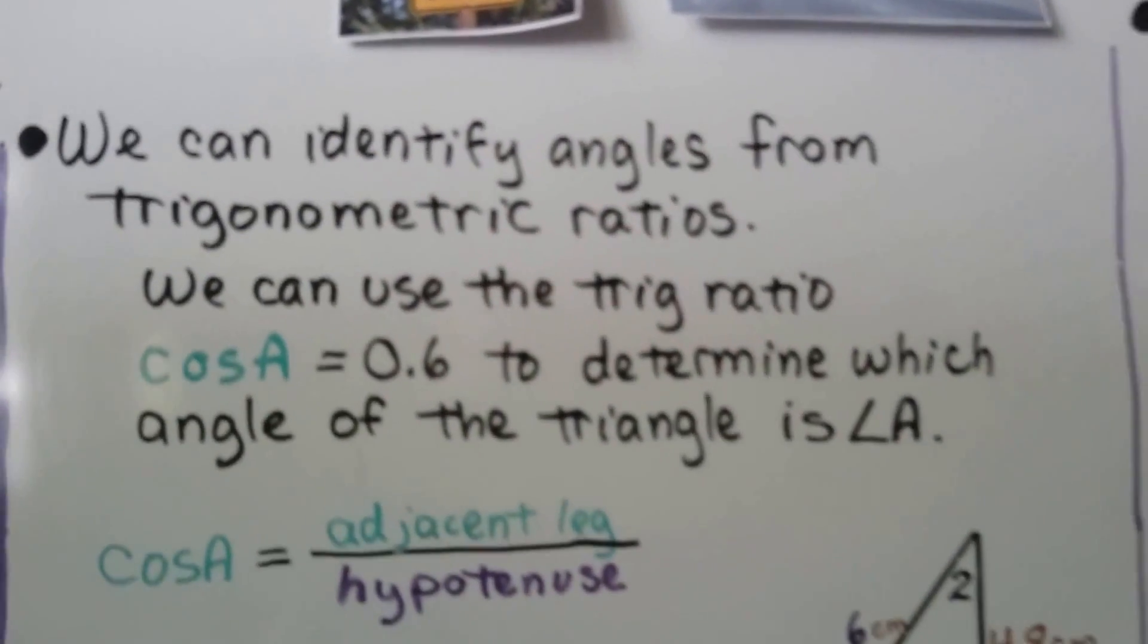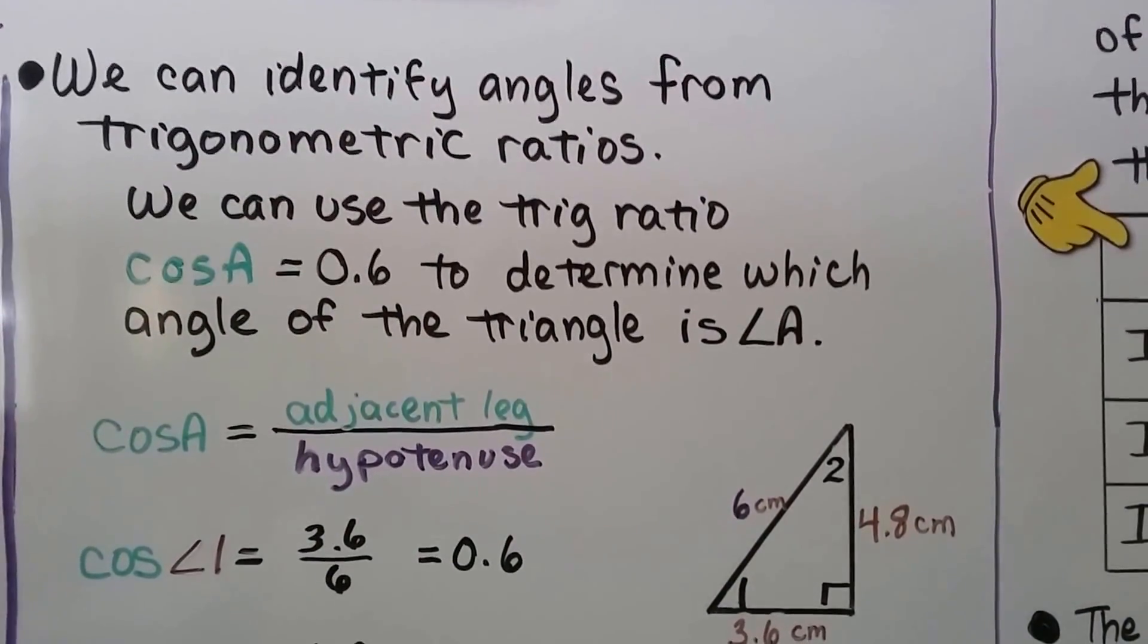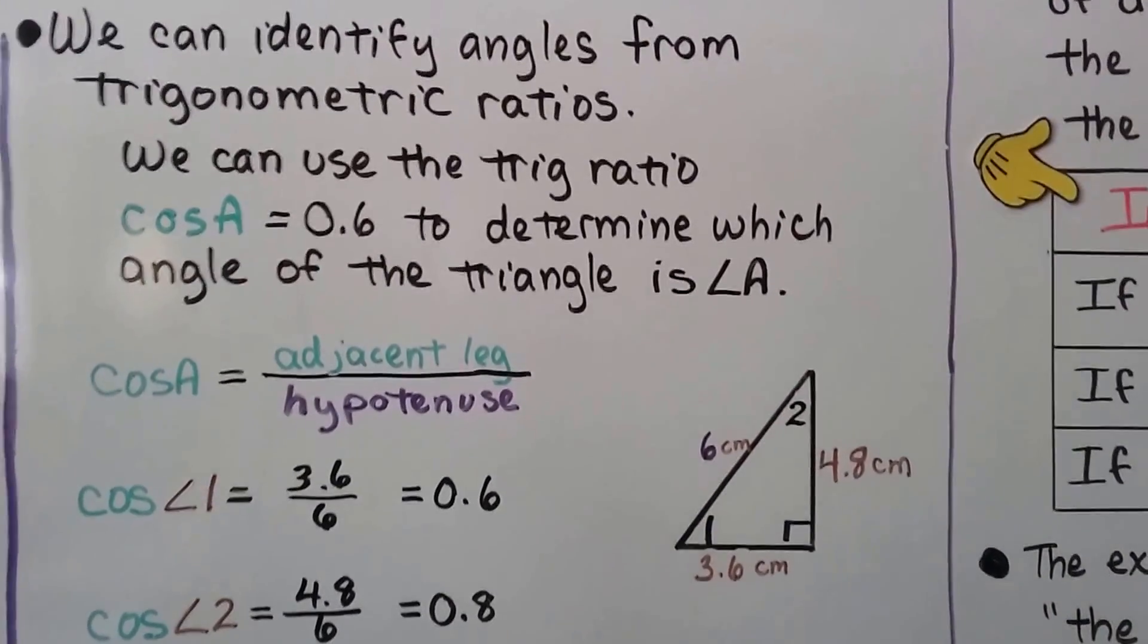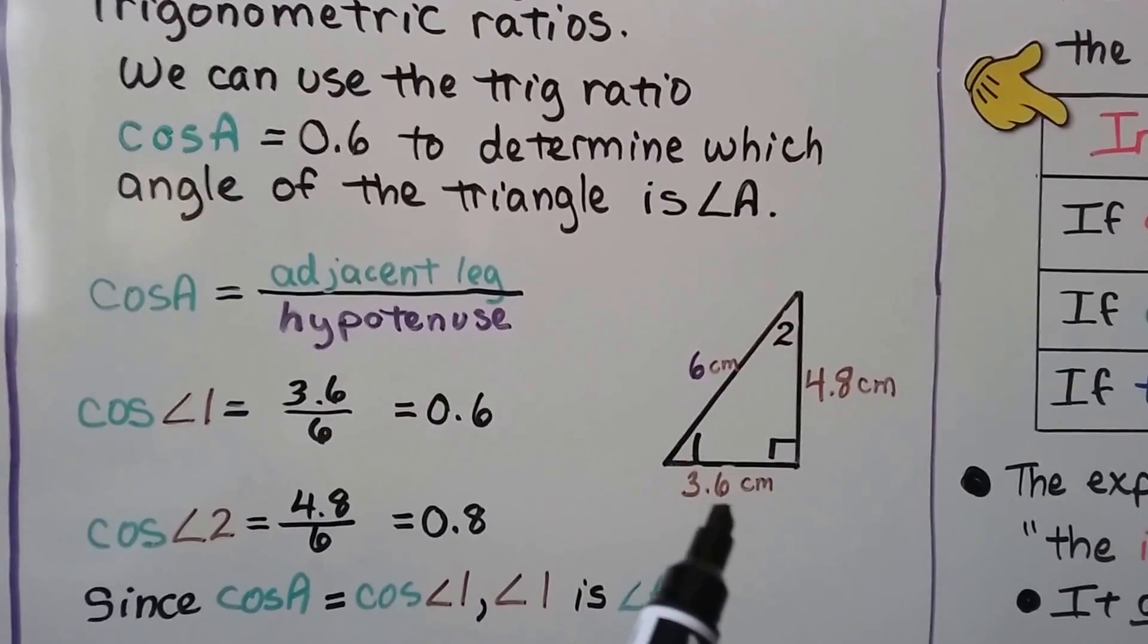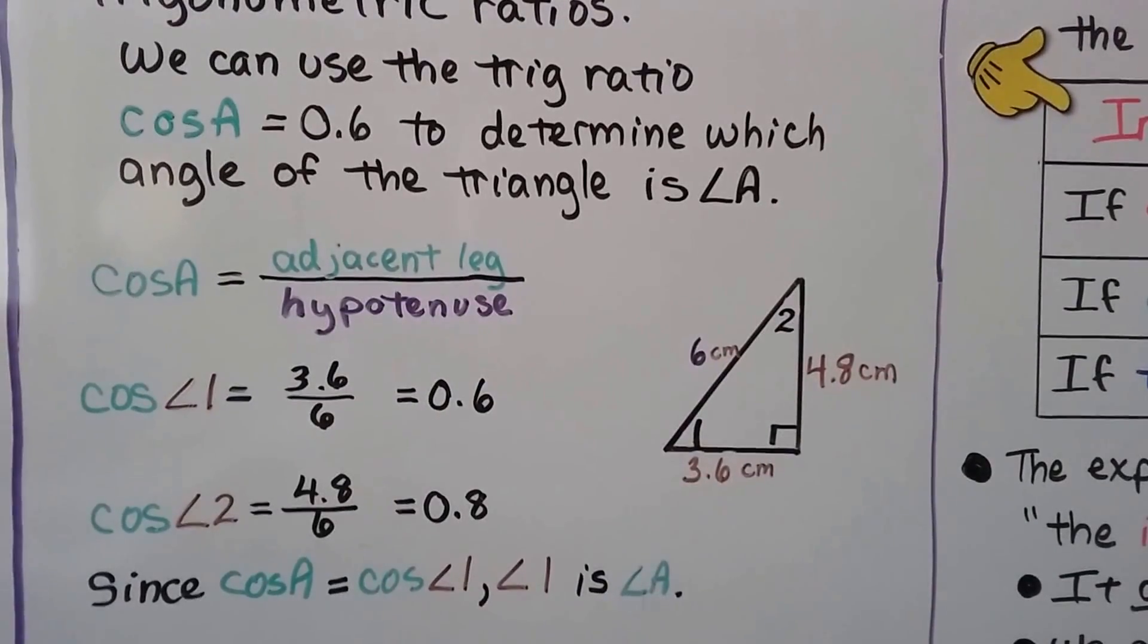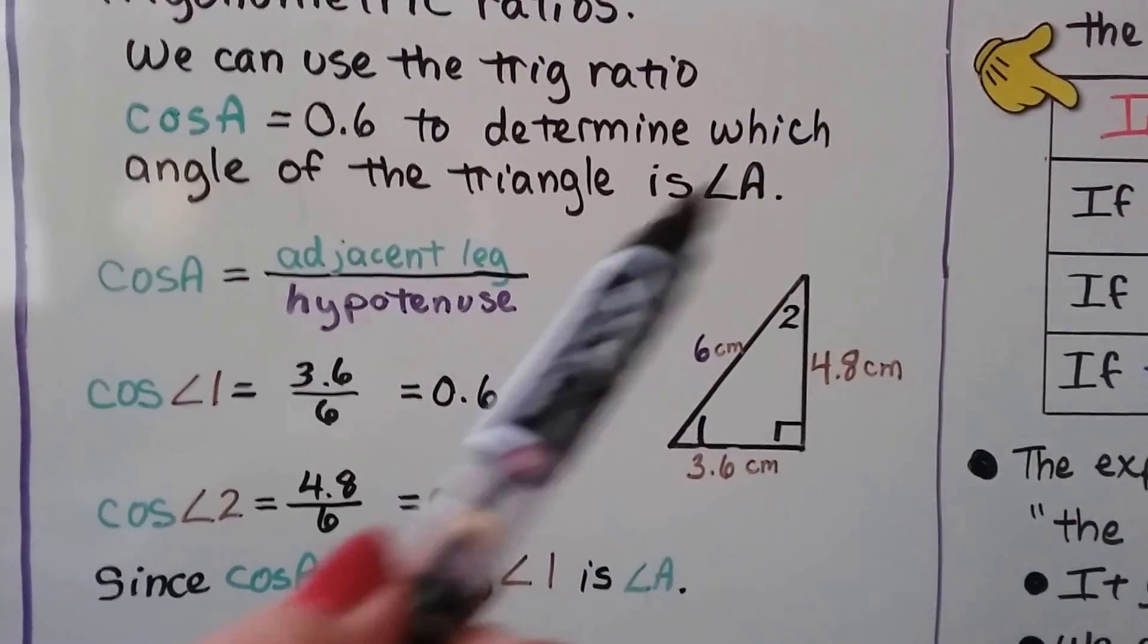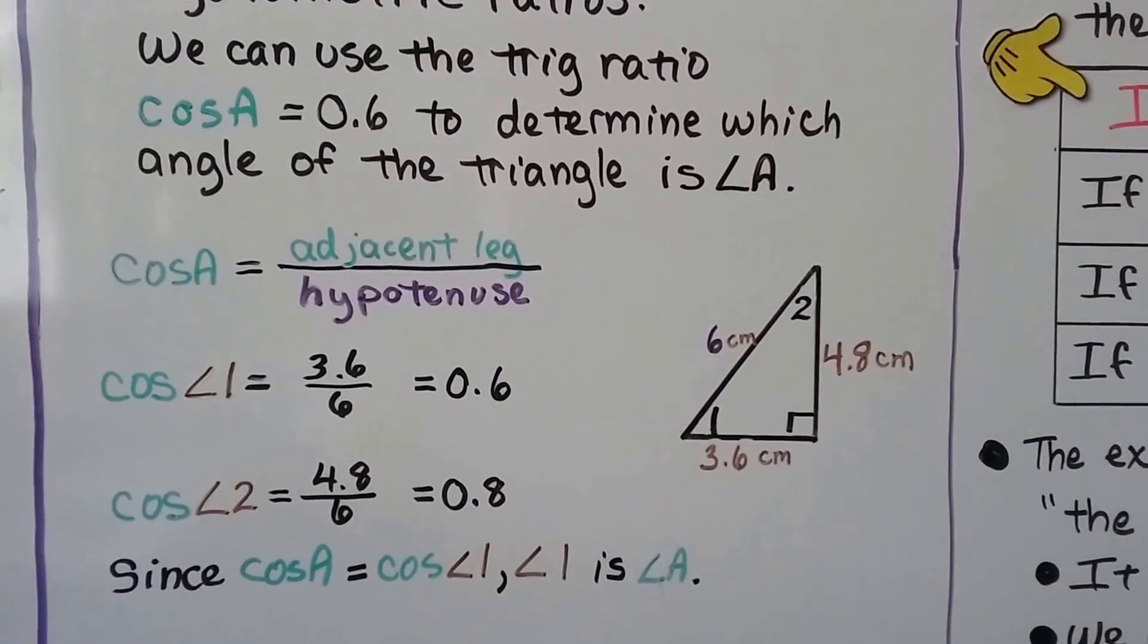We can identify angles from trigonometric ratios. We can use the trig ratio cosine of a equals 0.6 to determine which angle of the triangle is angle a. Looking at the diagram, we see the hypotenuse is 6 centimeters, this leg is 3.6, and this leg is 4.8. It's telling us this is angle 1 and that's angle 2, but we don't see ABC or XYZ telling us which angle is which.